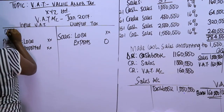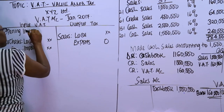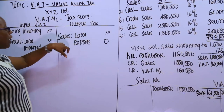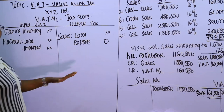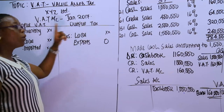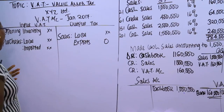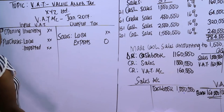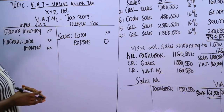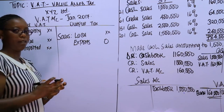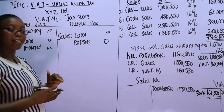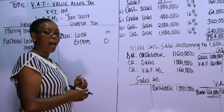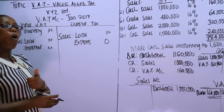Opening inventory goes on the input side because these are goods you will sell and collect output VAT on — whether locally or via export. Since there is attributable output VAT, you need to claim the input VAT. The other major things affecting sales and purchases are debit notes and credit notes. When a business issues a debit note, it means the previous invoice was understated, so an additional invoice or debit note is issued to correct the understatement.